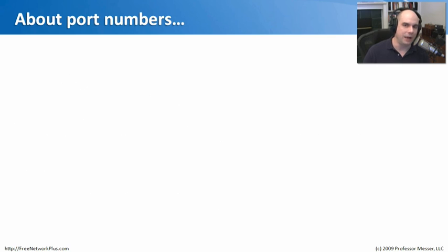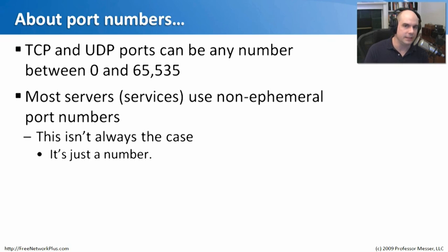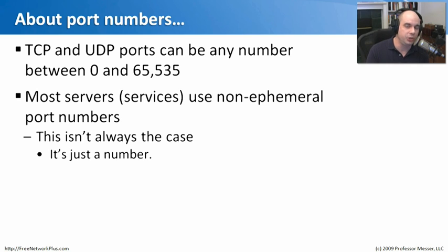A TCP port number or UDP port number is simply any number between 0 and 65535. Port number 0 usually isn't used very often — only in very rare circumstances — but it is a legal port number. These port numbers are used to communicate to a service on another machine. Most servers like web servers will use non-ephemeral or permanent port numbers, but that's not always the case. Port 80 is not always a web server — it's just a number we've all come up with and agreed on. If we're connecting to Google, we just expect Google is going to be using port 80.